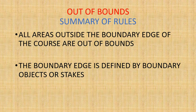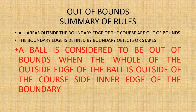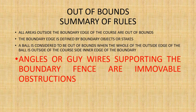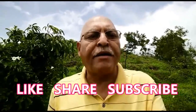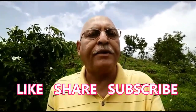To summarize: all areas outside the boundary edge of the course are out of bounds. The boundary edge is defined by boundary objects or stakes. A ball is considered out of bounds when the whole of the ball is outside the course-side inner edge of the boundary. Angles or guy wires supporting the boundary fence are immovable obstructions. Please like the video and subscribe for regular updates on the rules.